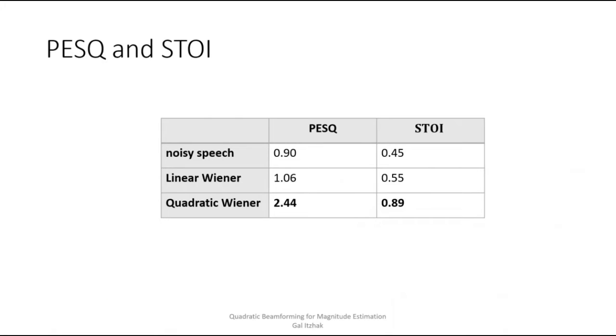Okay, so let's compare the PESQ and STOI scores of the non-speech signals with both beamformers. So it's very clear that while the linear Wiener beamformer exhibits some kind of an improvement to the noisy speech, with the quadratic Wiener, both the quality and the intelligibility are substantially preferable.